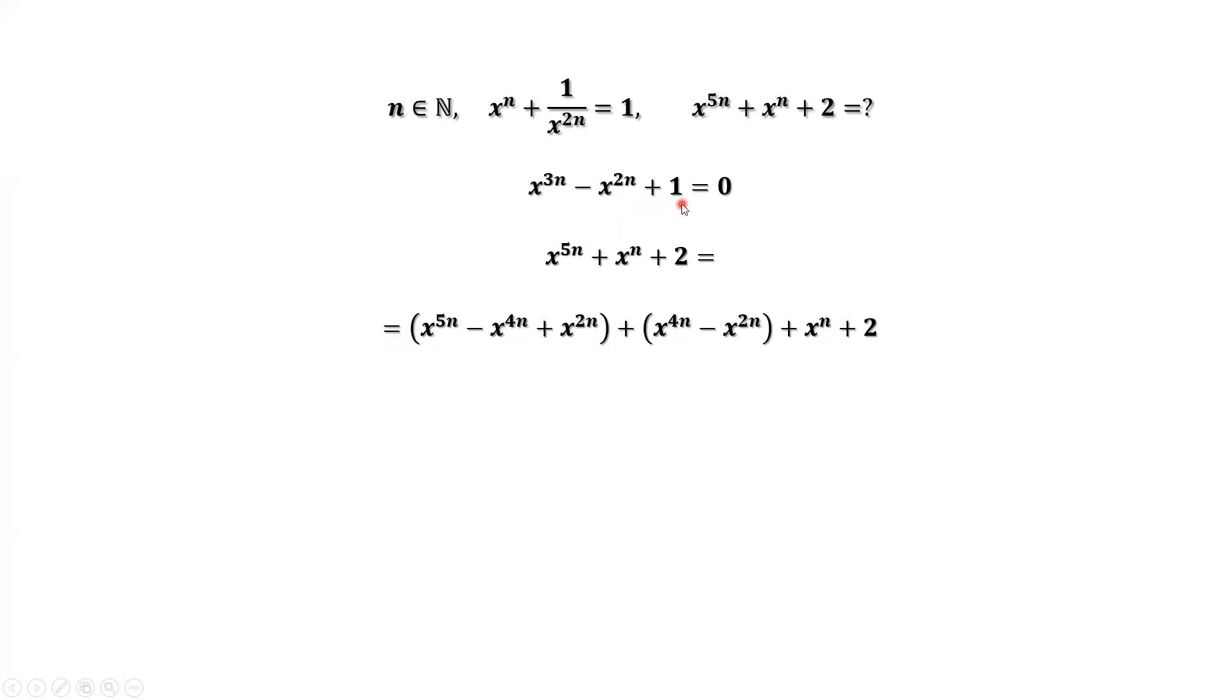The last term: we don't have x^(2n) here, so we have minus x^(2n). Same reason for the equal sign. Now here, look at the first group. We can factor x^(2n) out.